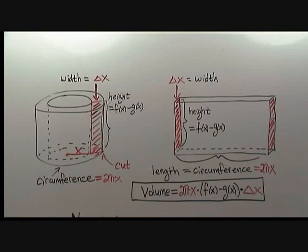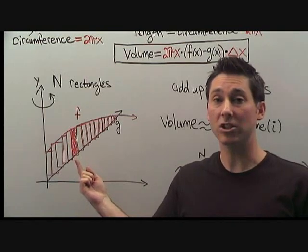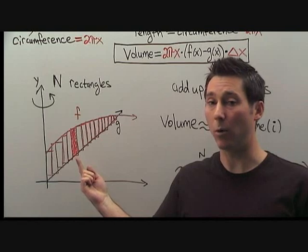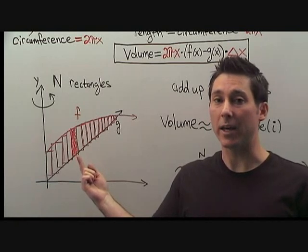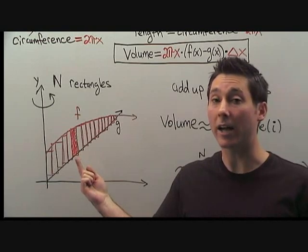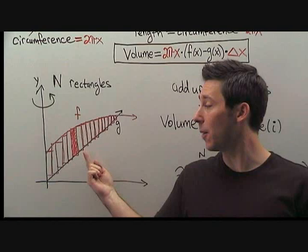The volume is 2πx times (f(x) - g(x)) times Δx. Remember, that is the length times the width times the height. We have just computed the shape that will result from revolving this small rectangle around the y-axis. The whole idea of this method is to now take lots of little rectangles just like this one and fill up our region.